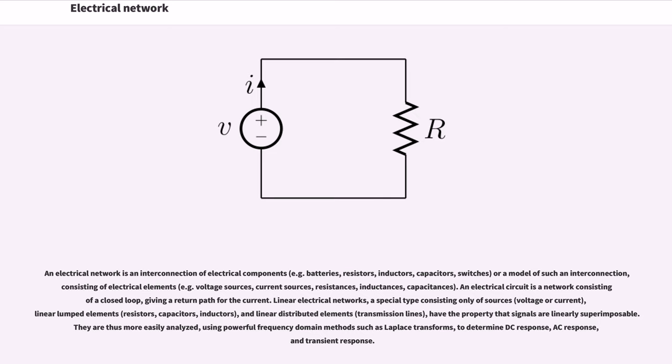Consisting of electrical elements, for example voltage sources, current sources, resistances, inductances, capacitances. An electrical circuit is a network consisting of a closed loop, giving a return path for the current.